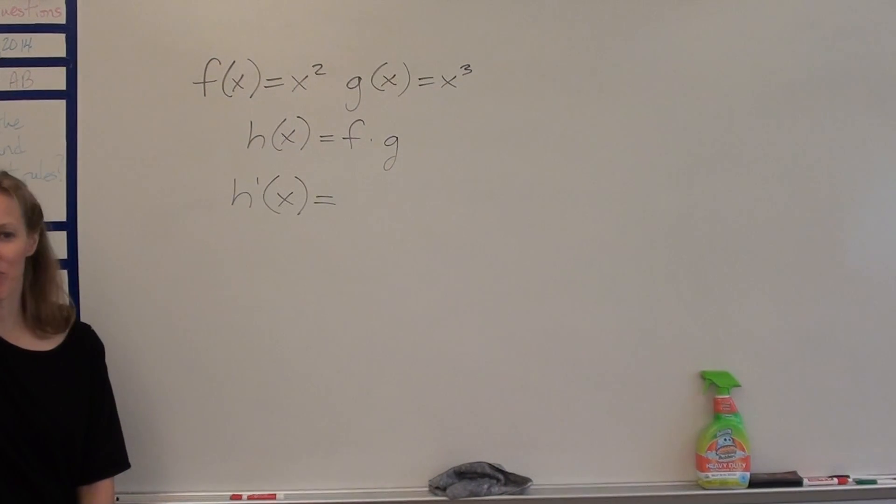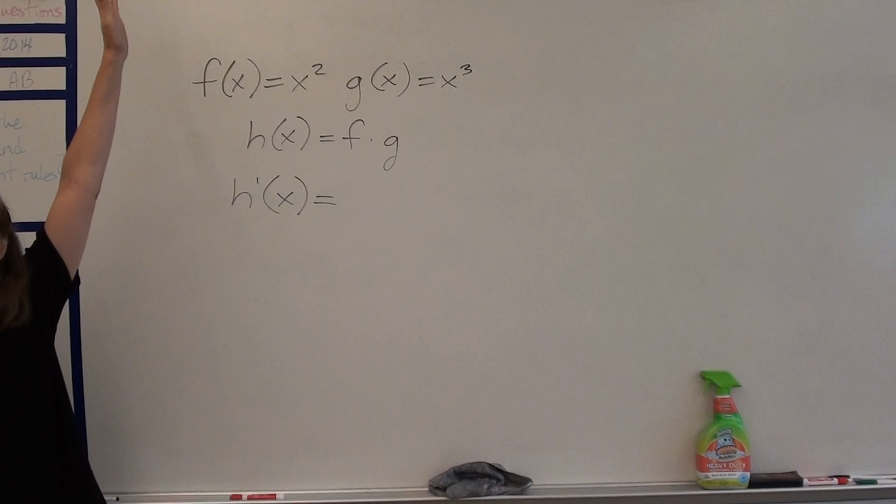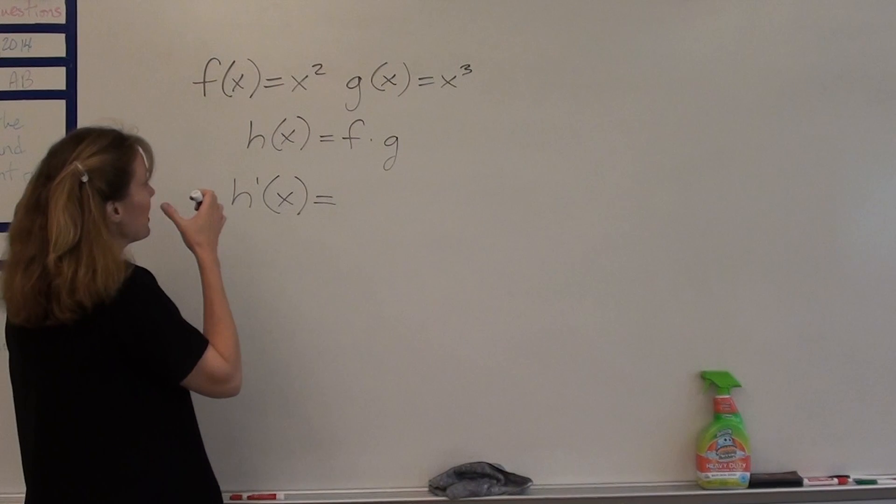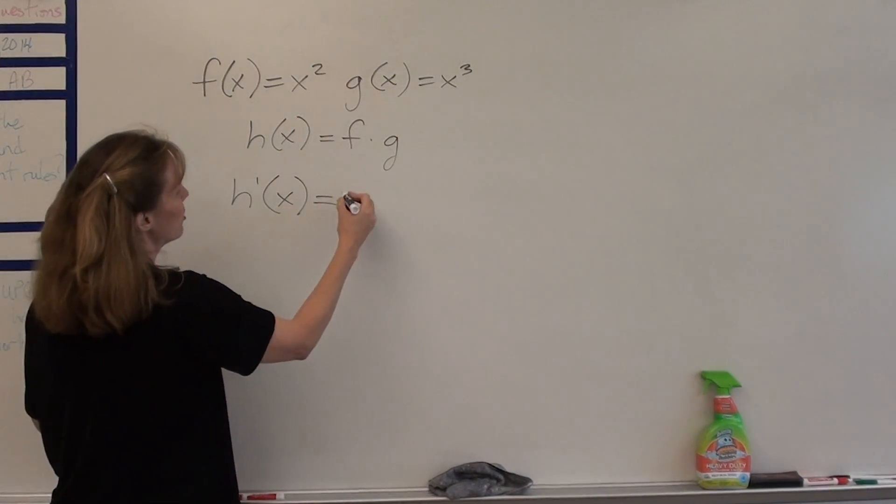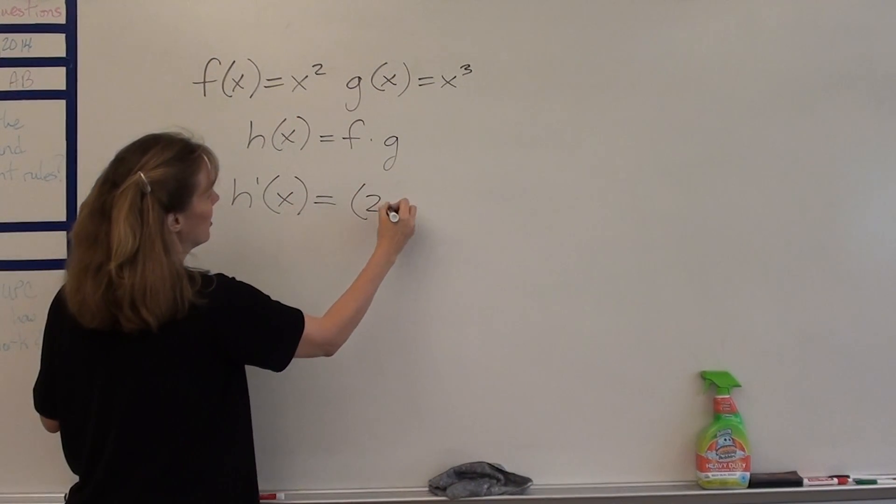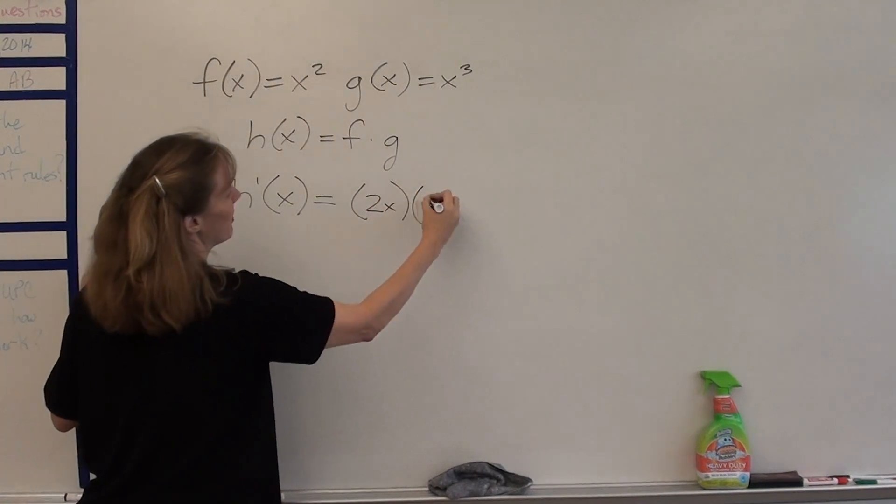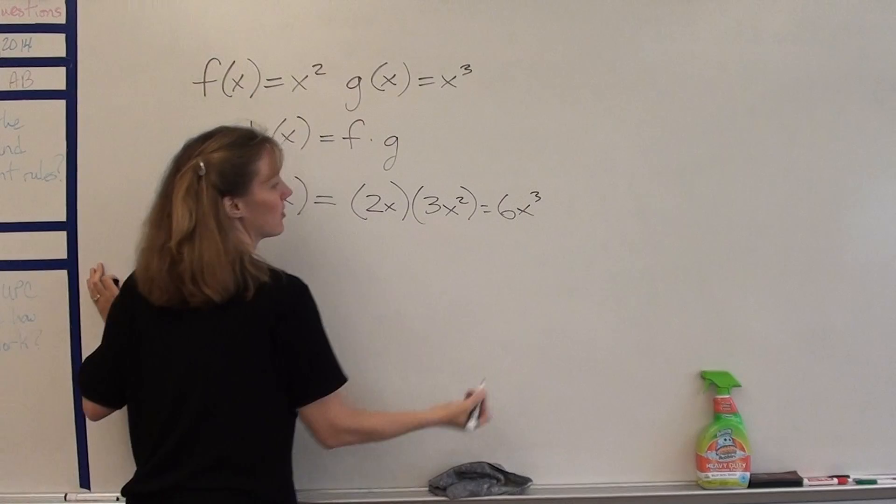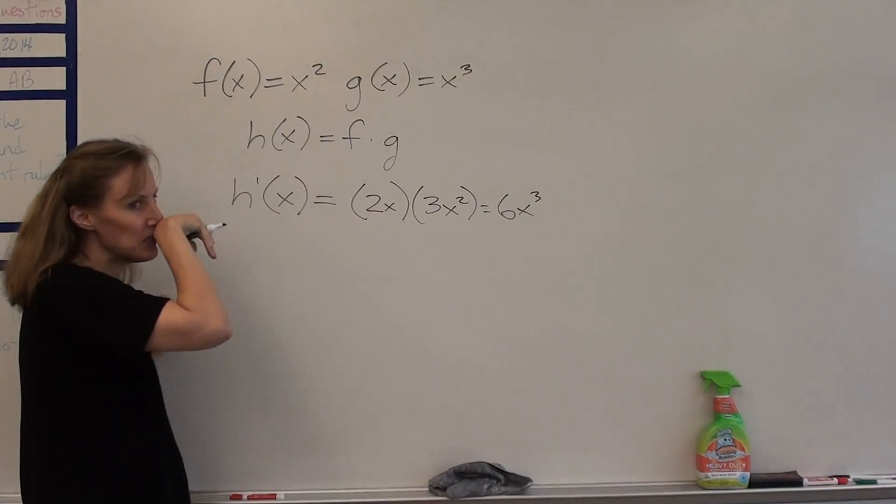How many people say 6x³? Okay, Camille says it proud, he's got his hand way up in the air. Oh good, we've got a bunch more. How many people say 5x to the 4th? All right, let's see. To get 6x³, you did the derivative of the first times the derivative of the second. Are we sure that that's the answer?